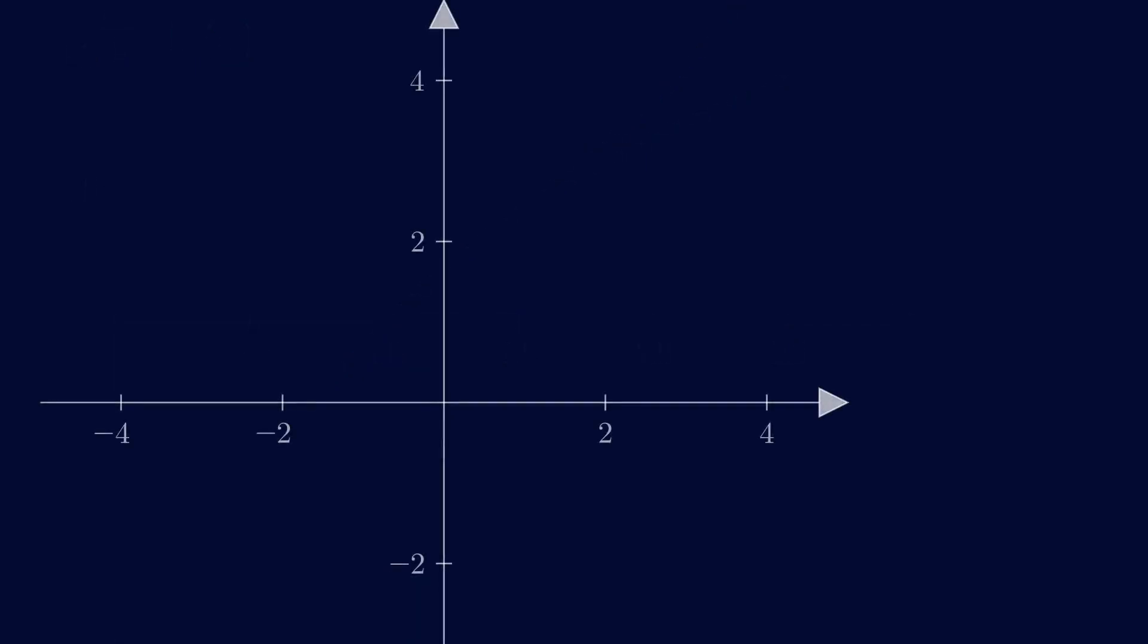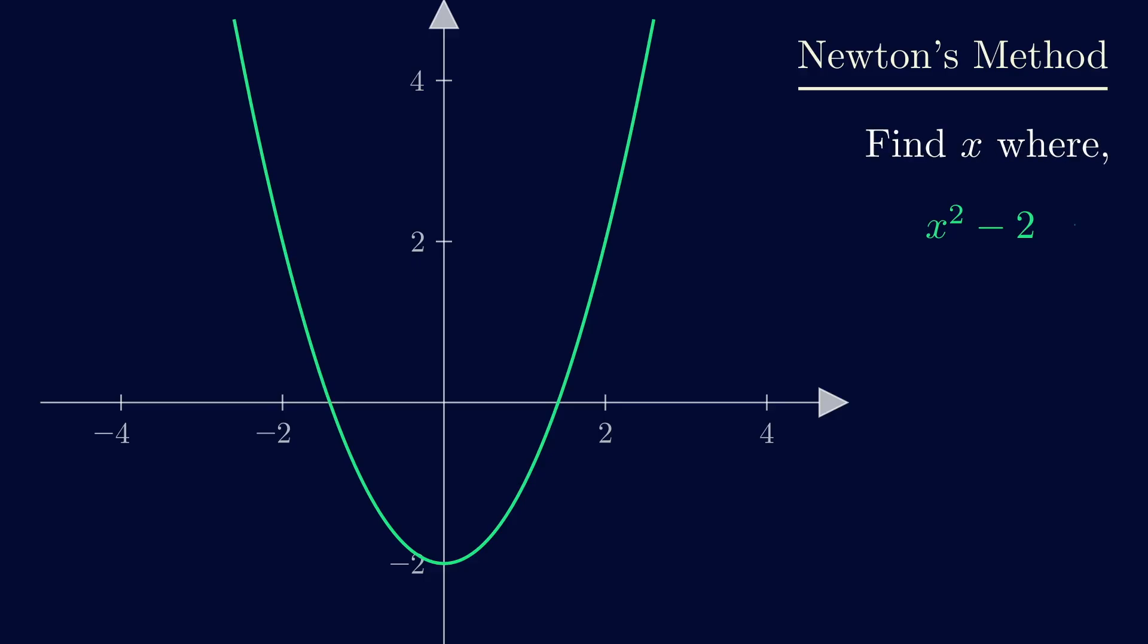Optimization is another huge application area for Taylor series. You might have learned about Newton's method when you took calculus. It's usually presented as a root finding algorithm, meaning we want to find the point where this function returns 0. So for this function, it's at these two red points.